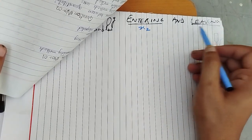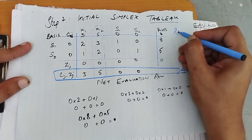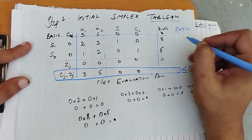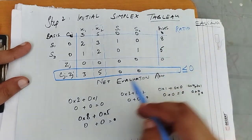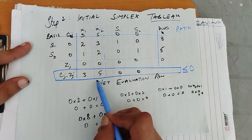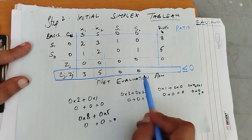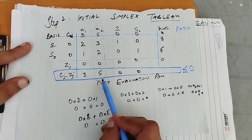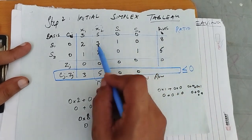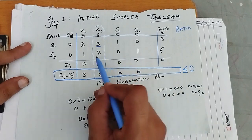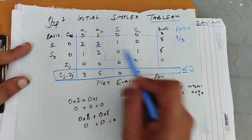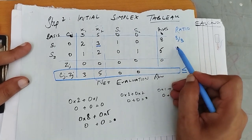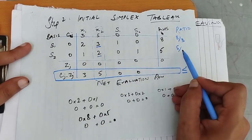Now we have to find the leaving variable. For the leaving variable, we have to find the ratio. How can we find the ratio? By dividing through the pivot column — that is the largest value, the highest value in the net evaluation row. So over here you see 3, 3 — we have to divide 8 by 3. Likewise, 5 has to be divided by 2.